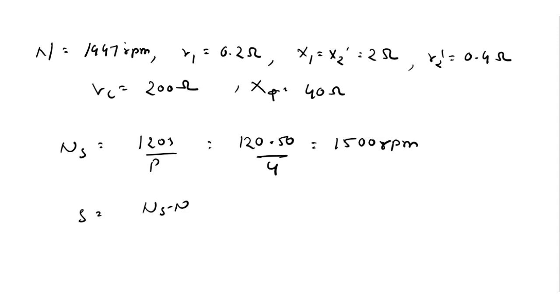Now s is equal to ns minus n divided by ns, which is equal to 1500 minus 1447 divided by 1500, which is equal to 0.035.